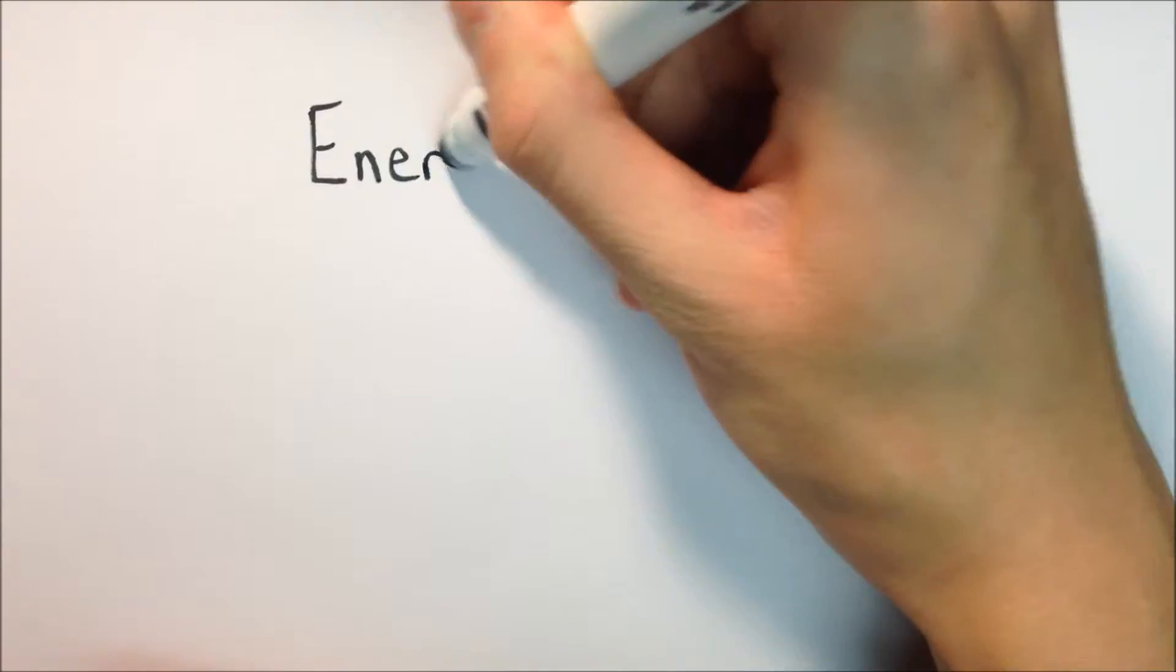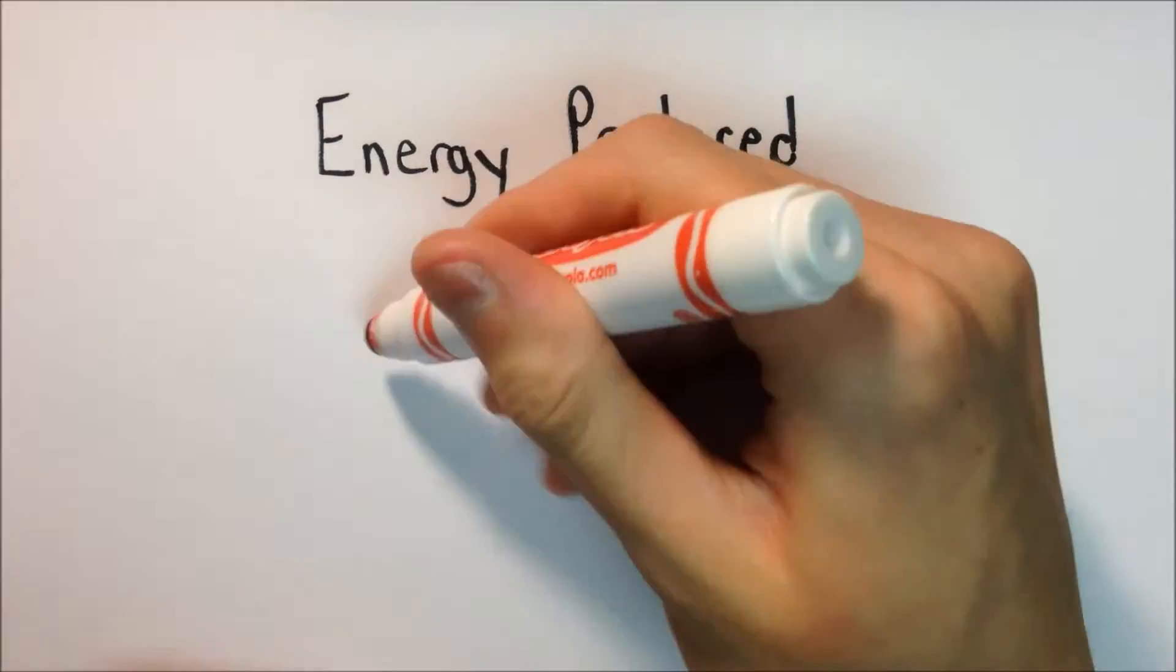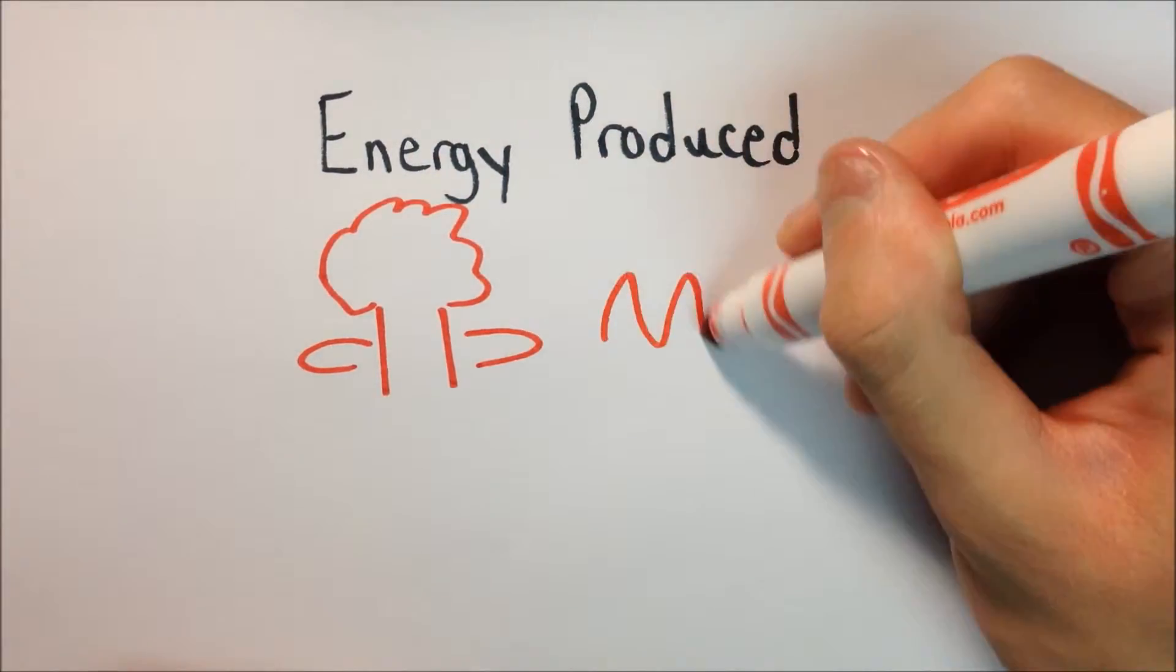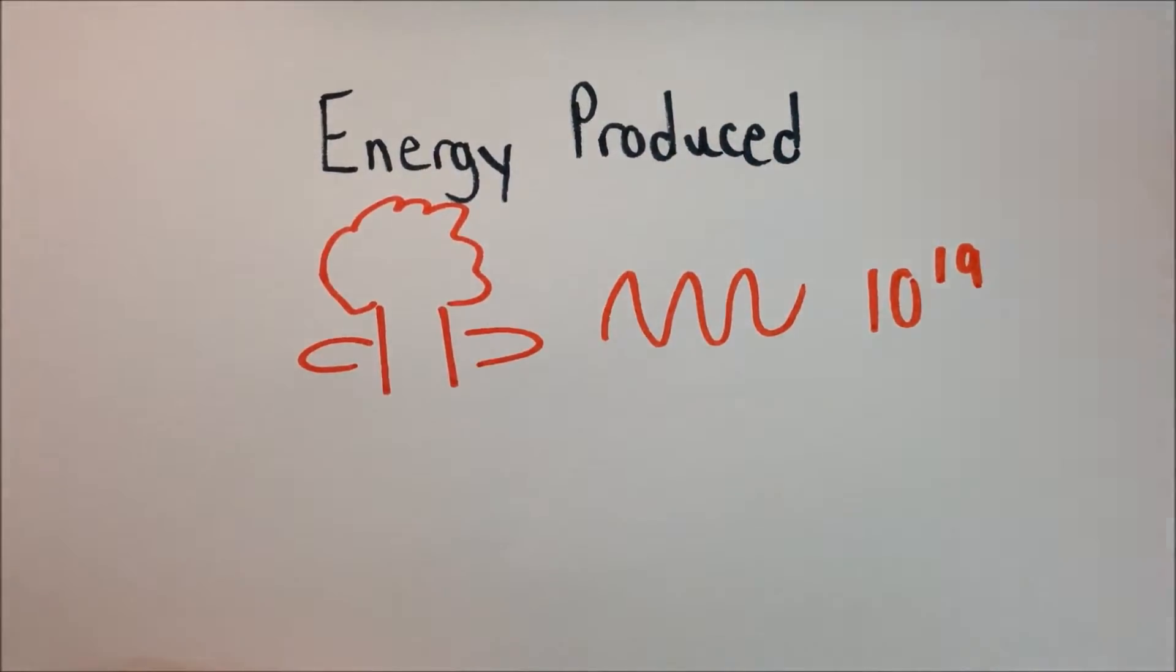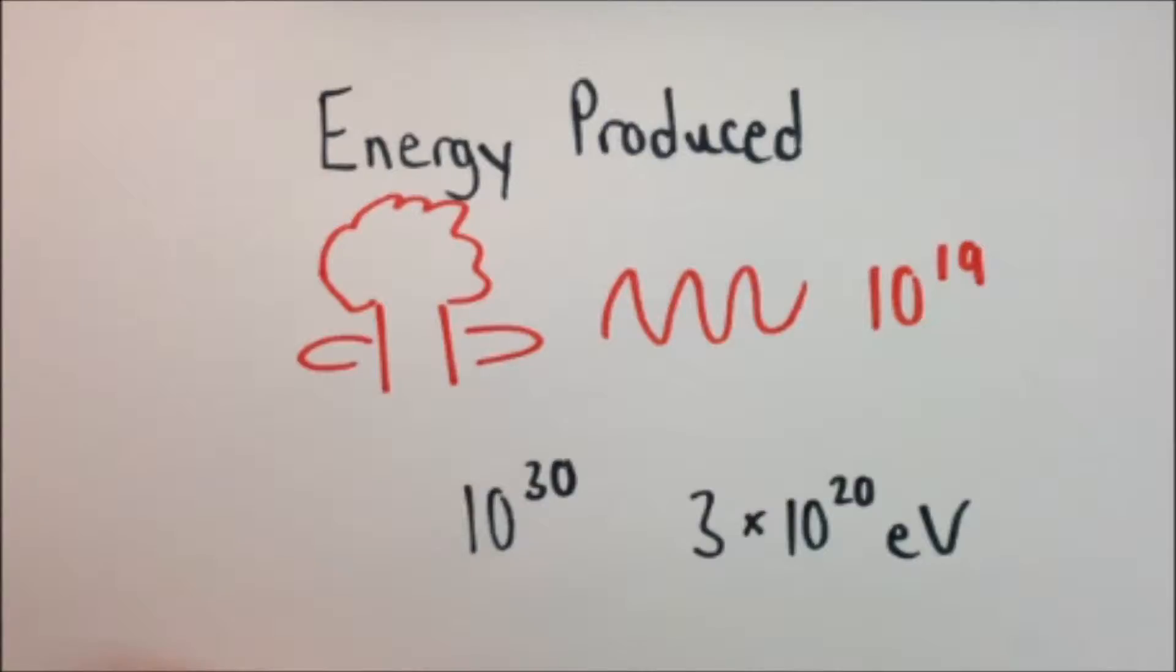I thought that the energy produced by these cosmic rays was the most interesting thing that I learned. When there's a nuclear explosion, gamma rays are emitted with a frequency of about 10 to the 19th hertz. But with these cosmic rays, they can reach upwards to 10 to the 30, with an energy produced of 3 times 10 to the 20 electron volts.